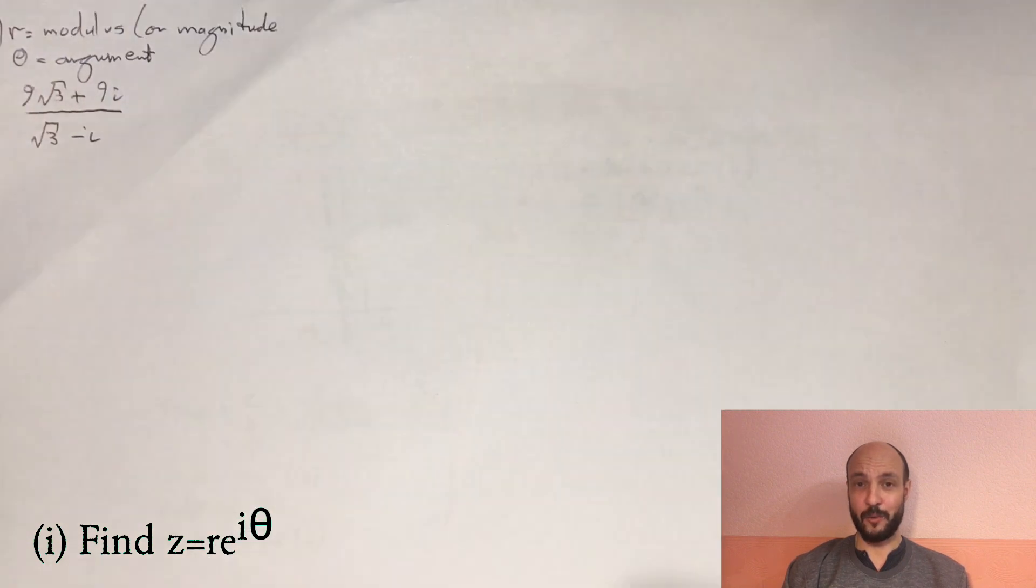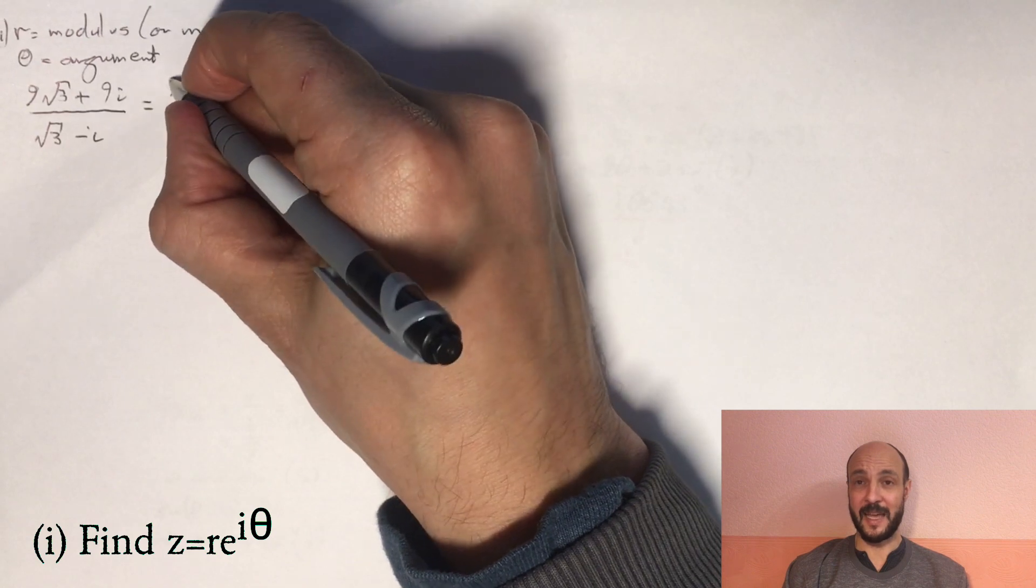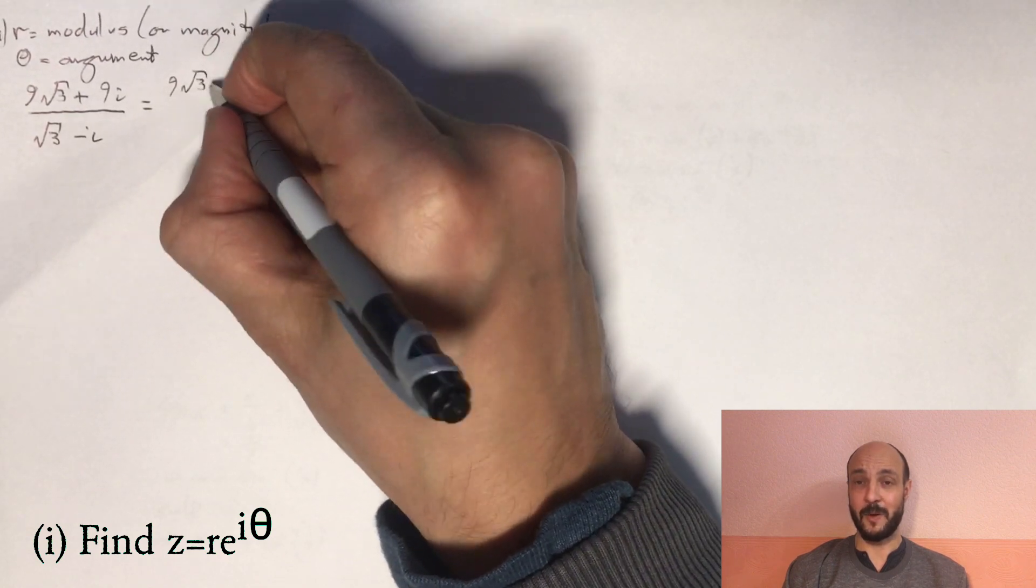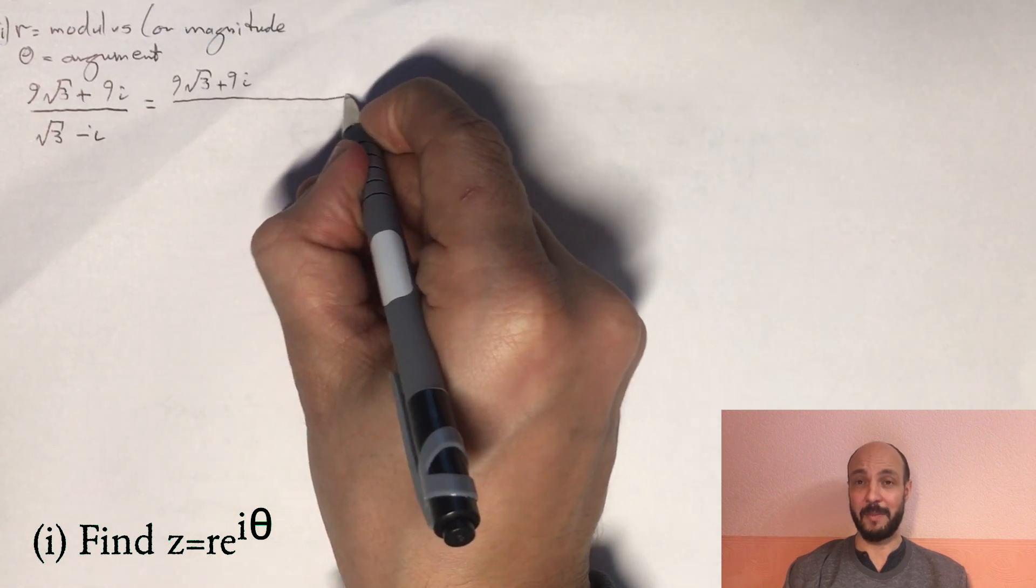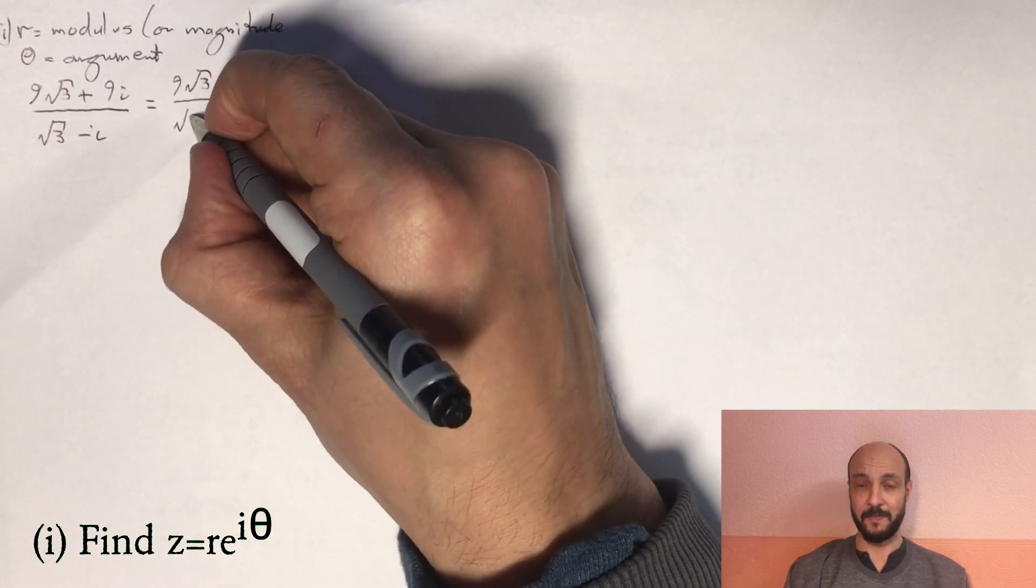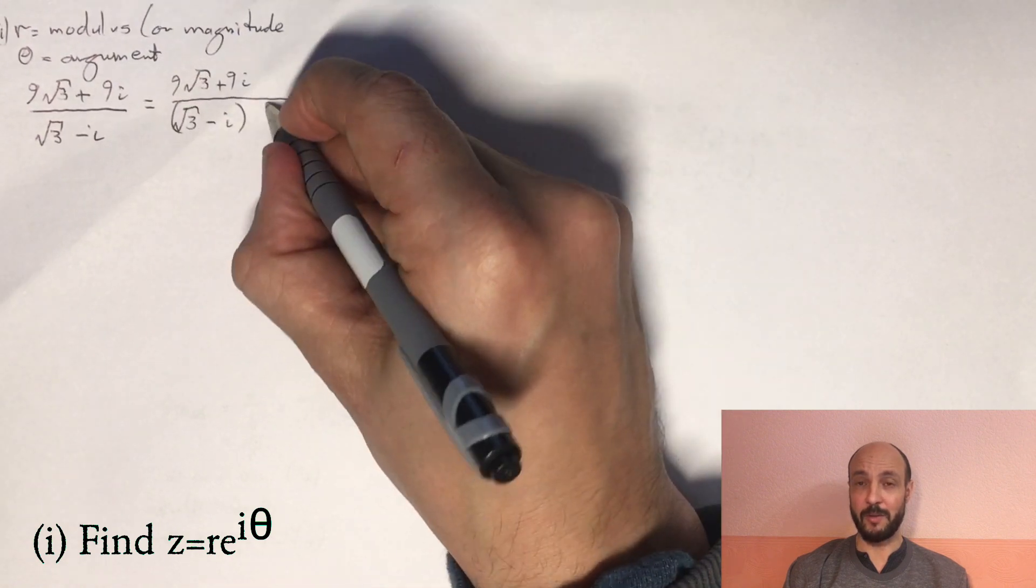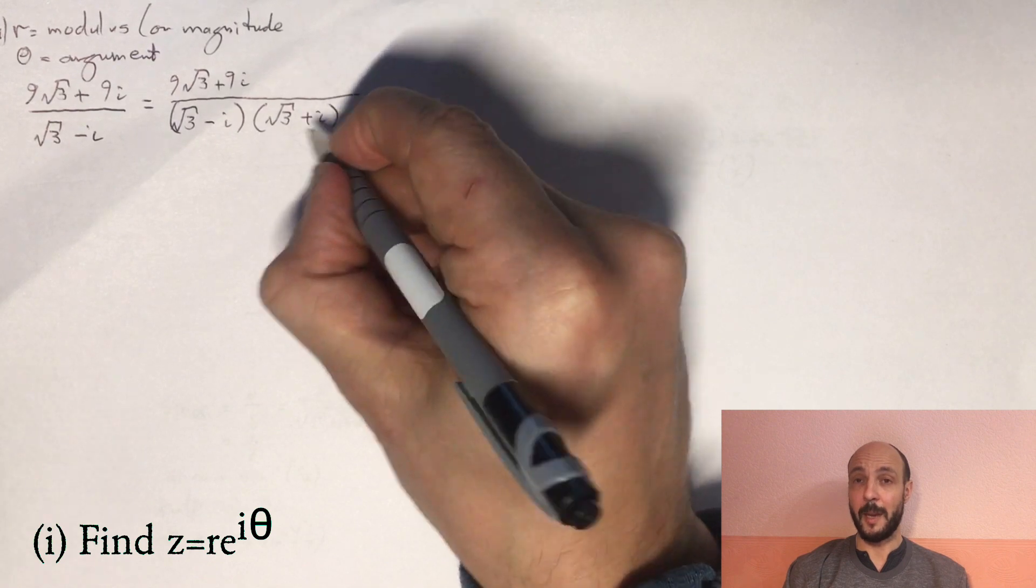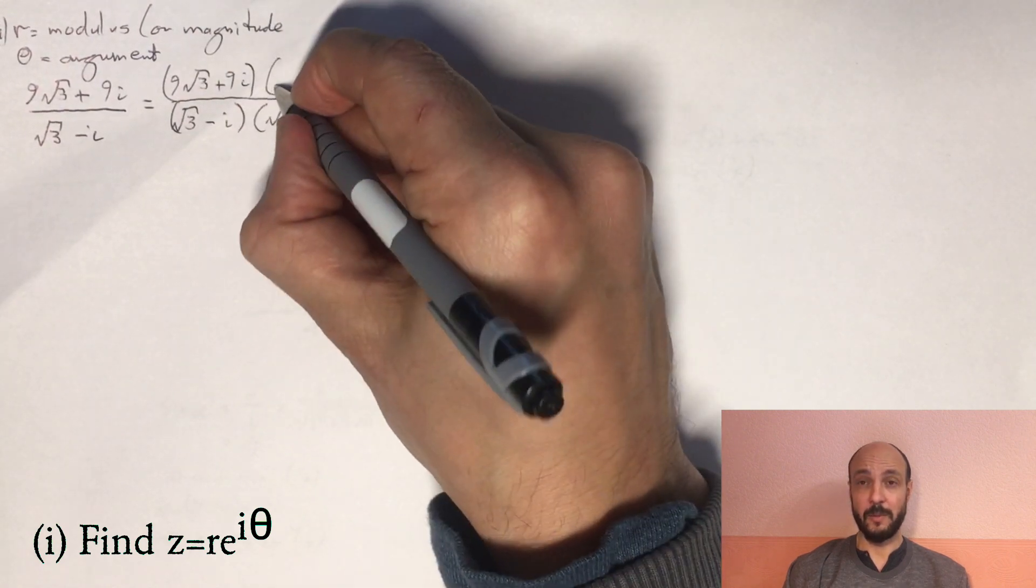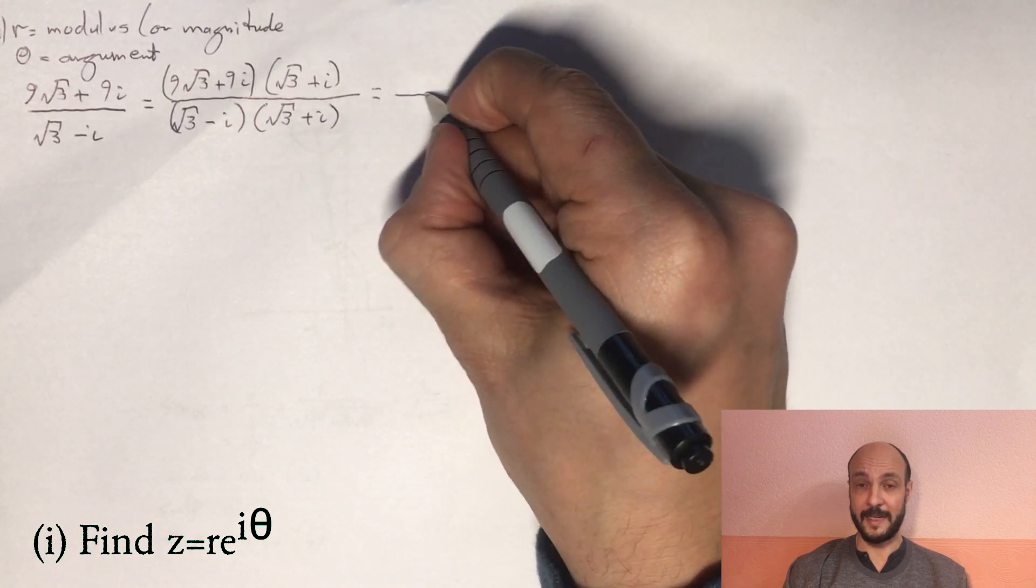Our difference of two squares formula tells us that (a - b)(a + b) = a² - b². And by squaring the imaginary number, it gets rid of our imaginary number from the denominator. So in our case, in order to get rid of the i in √3 - i, we're going to multiply by √3 + i. So we multiply both the top and the bottom of the fraction by √3 + i.